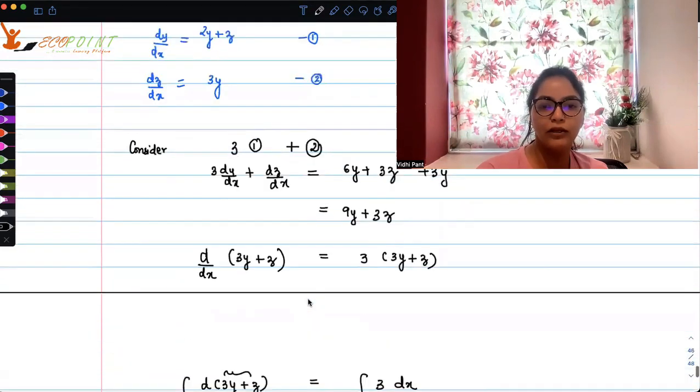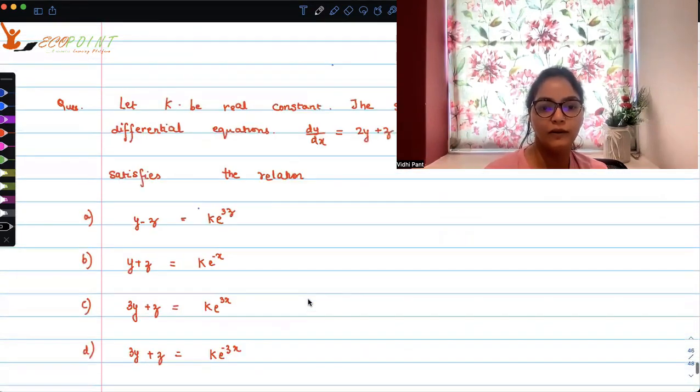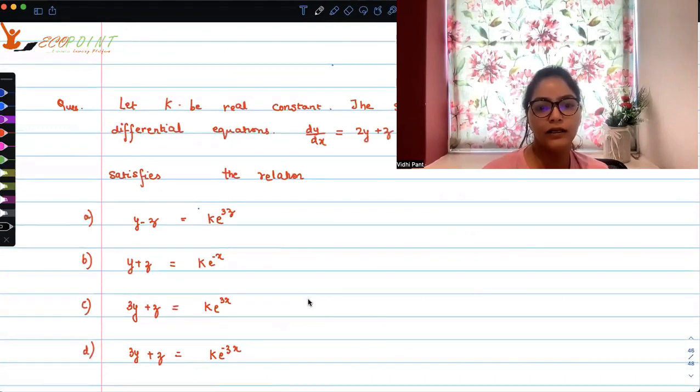So if you look at your options, clearly option C matches with what we are getting. So if we solve these two equations dy/dx equals 2y plus z and dz/dx equals 3y, the solution will be satisfying this relation where k is a real constant.